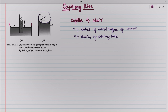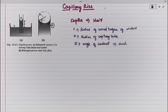Consider a vertical capillary tube of circular cross-section inserted into an open vessel of water. The angle of contact between water and glass is acute. Here, theta is the angle of contact, and in this case it is acute — that is, it wets the tube.